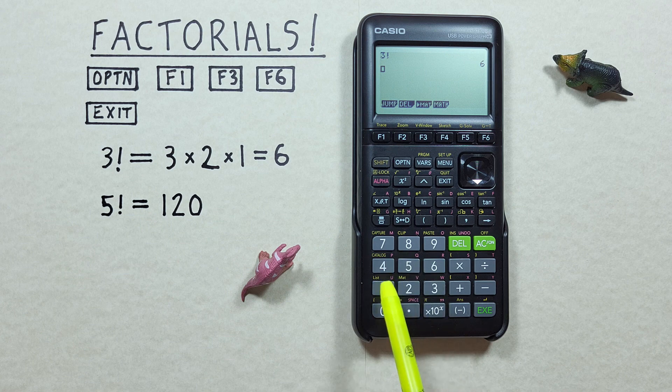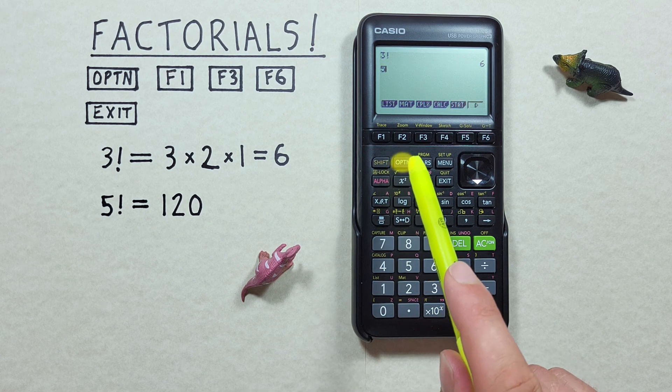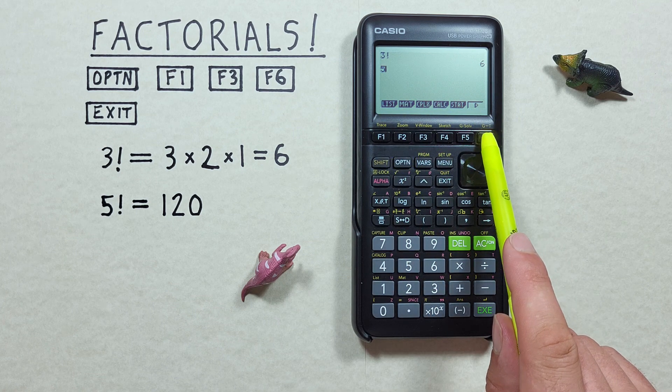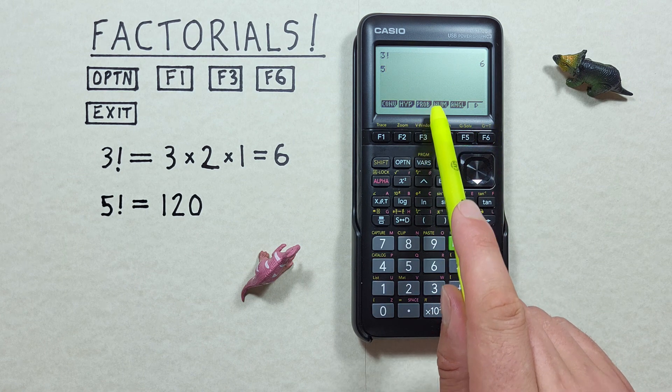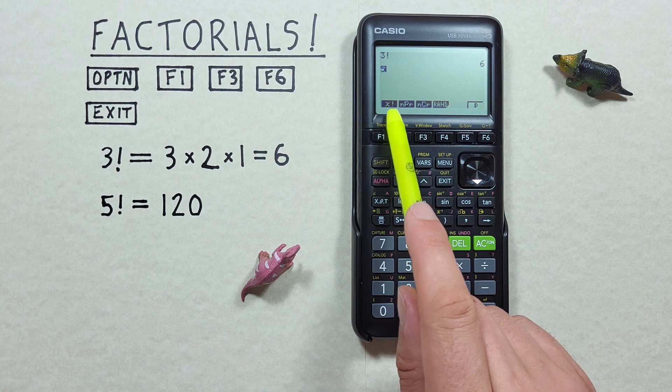Again we start by placing the 5 on our screen and then pressing the option to this menu here where we press F6 again and then choose the F3 probability and F1 for the factorial.